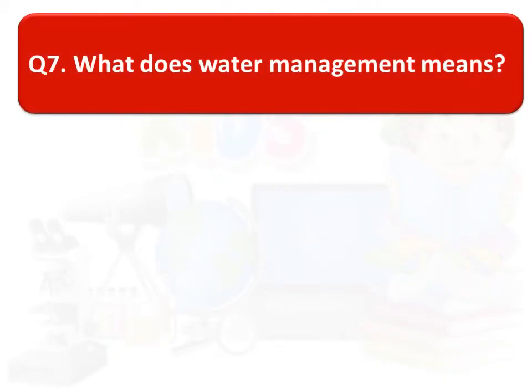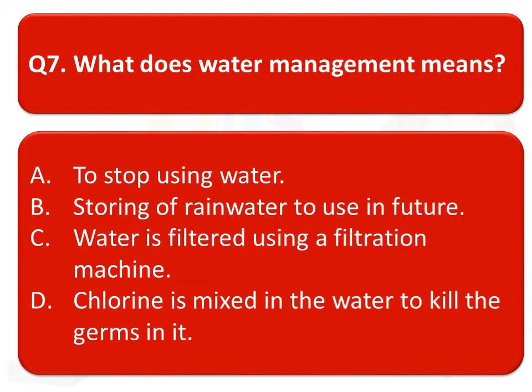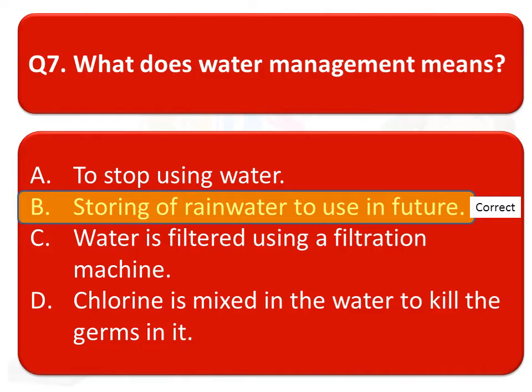The next question is: what does water management mean? Option A: to stop using water. Option B: storing of rainwater to use in the future. Option C: water is filtered using a filtration machine. Option D: chlorine is mixed in the water to kill the germs in it. The correct option is storing of rainwater to use in the future.